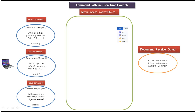As per command design pattern, the command object has three things. The first one is the request, the second one is the receiver object which can handle the request, and the third one is the execute method. The execute method will call the receiver object method to handle the request.